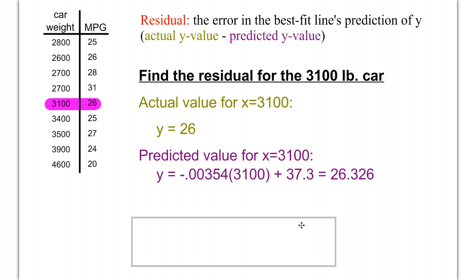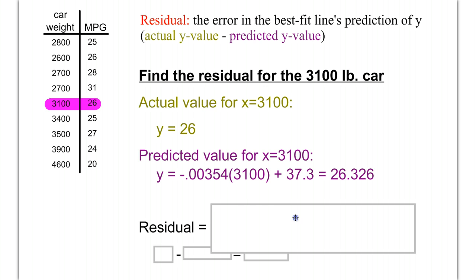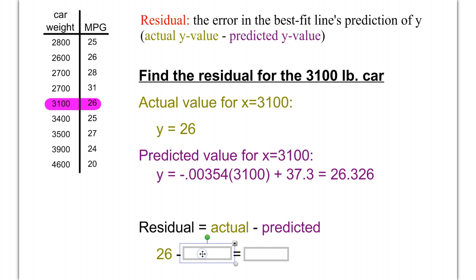To solve for the residual, you take your actual value and you subtract your predicted. So, you take 26 and you subtract this 26.326, and that's going to give you a negative number, negative .326. That is our residual. And to make sure we have the idea, let's practice one more.